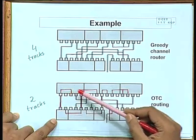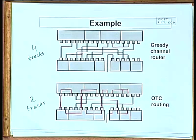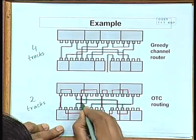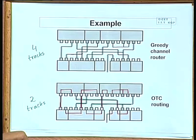A student asks whether the vertical segments over the cell are in the same layer as the horizontal segments. The answer is yes — over the cell the connections are in the same layer, because there are already devices laid out below and you cannot have a via connection anywhere you want, as it can interfere with other layers running below. So all connections over the cell are planar, with no switching between metal layers.